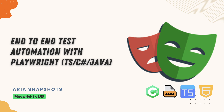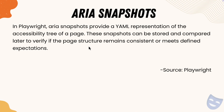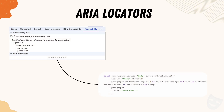The ARIA snapshot provides a YAML representation of the accessibility tree of a page, and these snapshots can be stored and compared later to verify if the page structure remains consistent or meets defined expectations. If you go to the accessibility section of your Chrome DevTools, you can see the ARIA tree for any selected element or area of a page, and this is exactly what is rendered in the toMatchAriaSnapshot method.